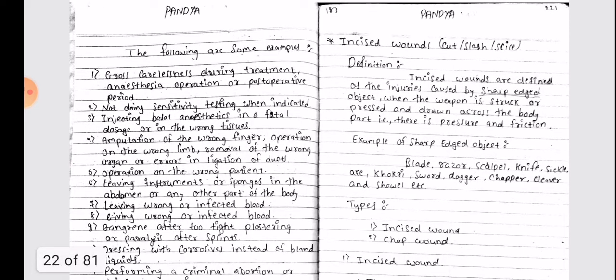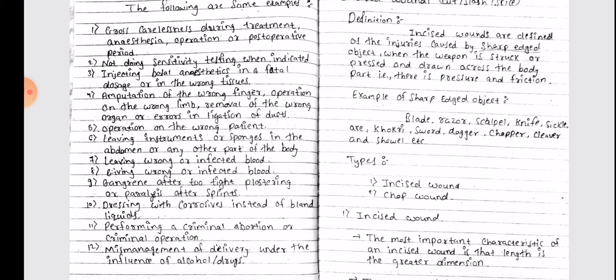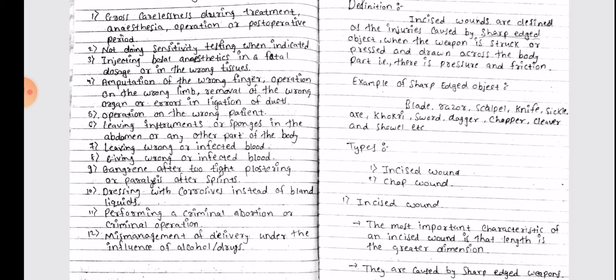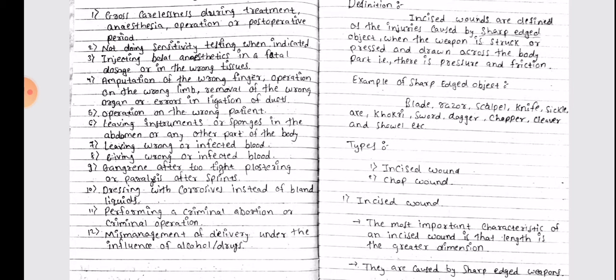The following are some examples: gross carelessness during treatment, anesthesia, operation, or postoperative period; not doing sensitivity testing when indicated; injecting basal anesthetics in a fatal dosage or in a wrong tissue; amputation of the wrong finger; operation of the wrong limb; removal of the wrong organ or errors in the ligation of ducts.